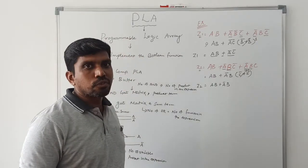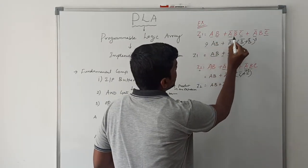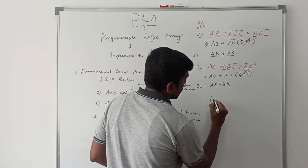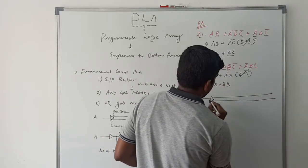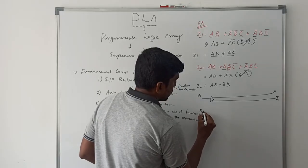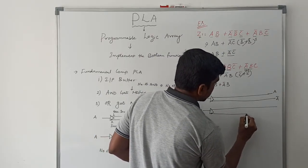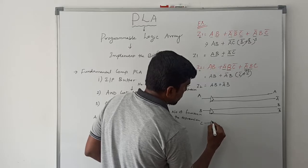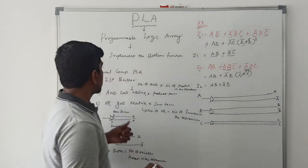Now I am going to draw the PLA structure for these two expressions. First, find the number of variables — here A, B, C, so three variables are present. Therefore I draw three input buffers. Input A gives outputs A and A bar; input B gives outputs B and B bar; input C gives outputs C and C bar. The first component is complete.